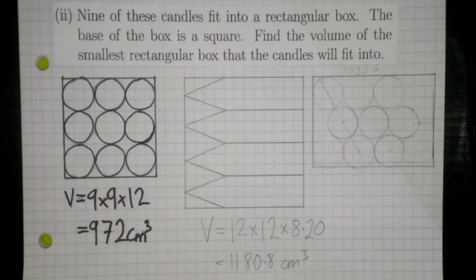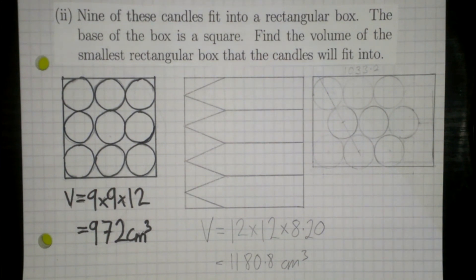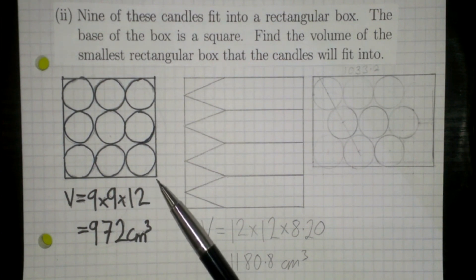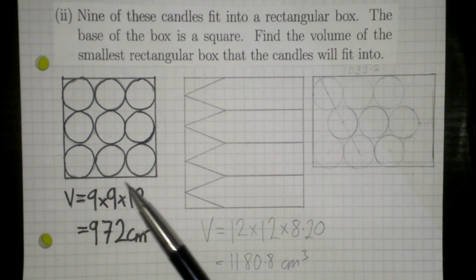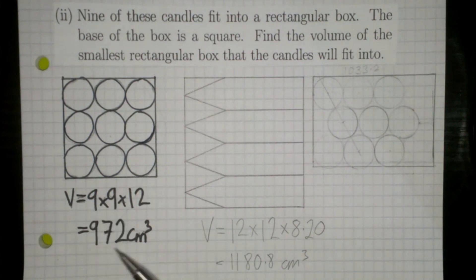It's worth knowing that this configuration gives the smallest volume. A cube is the most efficient rectangular box shape, so the closer you can get to a cube — where all dimensions are similar — the smaller the volume will be. This 3×3 upright arrangement is the closest to a cube, so this is the configuration you want.